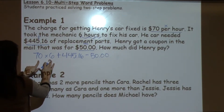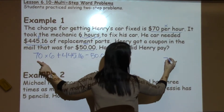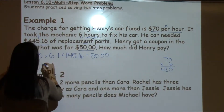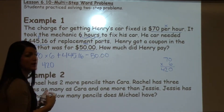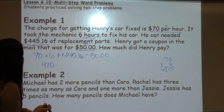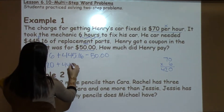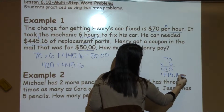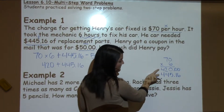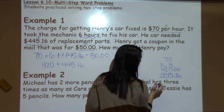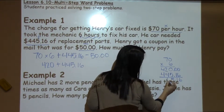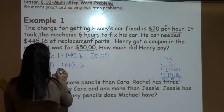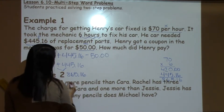I'm just going to focus first on 70 times 6, taken off to the side. 6 times 0 is 0, and 6 times 7 is 42, so that answer is $420 for the man hours — how much time they spent working on his car. Now I need to add in $445.16. I didn't have any cents on my $420, so I added two zeros as placeholders. So that gives me $865.16 as my total so far spent on the car.